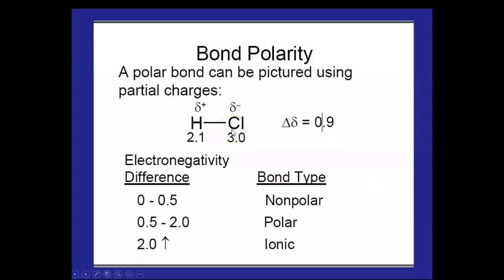What we do is we say the more electronegative has what we call a partial negative charge. This little Greek lowercase delta is partial, and this is a partial positive on the hydrogen, which, of course, is less electronegative.